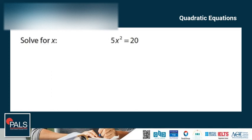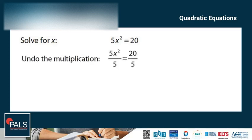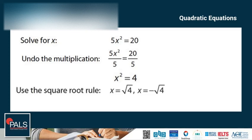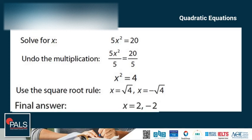Let's try another example: 5x squared is equal to 20. In this case, we need to undo the multiplication first, so we divide both sides by 5. We have x squared is equal to 4. Then, using the square root rule, x is equal to the square root of 4 and x is equal to negative the square root of 4. So the final answer is x is equal to 2 and negative 2.